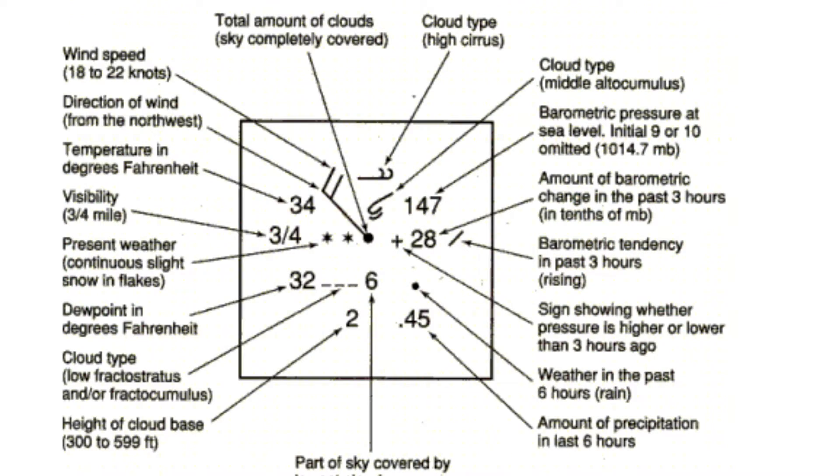So here would be an example of a station model. Let's kind of go through each symbol and what you can do to figure out what it's telling you. Let's start in the middle first with this round dot here. This is the total amount of clouds in the cloud coverage.